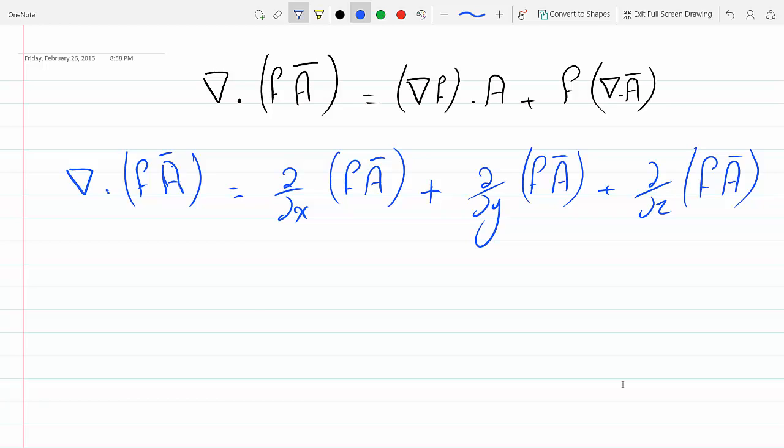Now motivated by the product rule, I will apply the product rule on this guy and differentiate with respect to x. So this will be df over dx times A plus f partial derivative with respect to x of A over dx. And I will do the same on the second one and the third one.